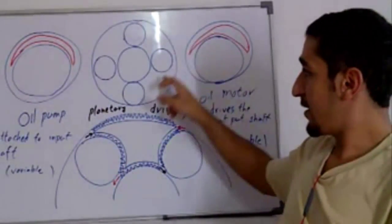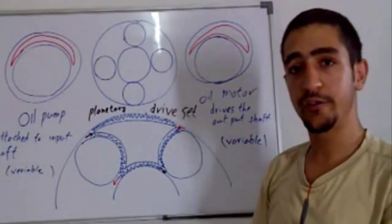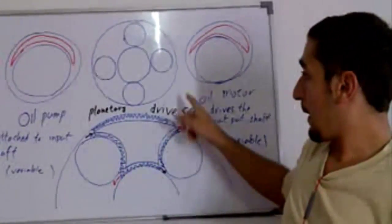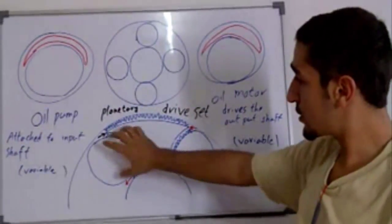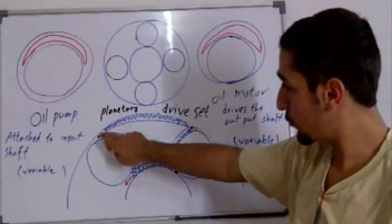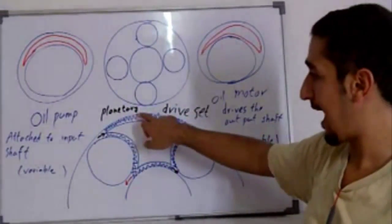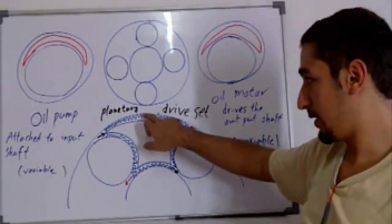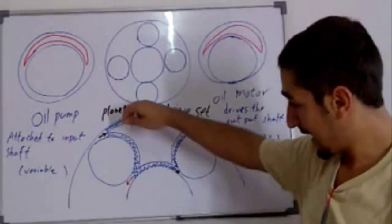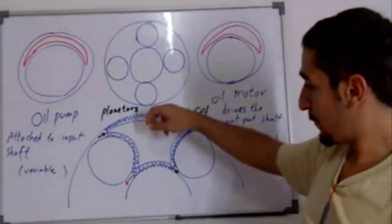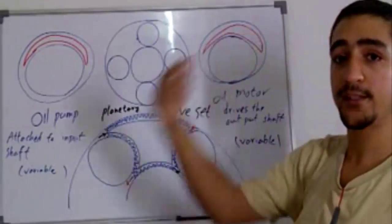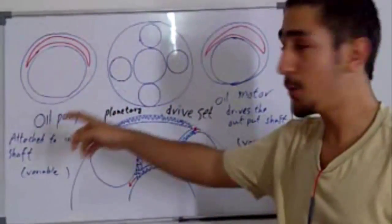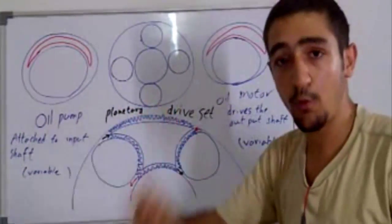The oil motor is variable. So how can we choose reverse? The oil pump will pump the oil in reverse direction. This will allow to have faster rotation in the ring gear, which is the outer part. The faster rotation will allow the planet carrier to rotate in opposite direction. The oil pump and the oil motor are variable.